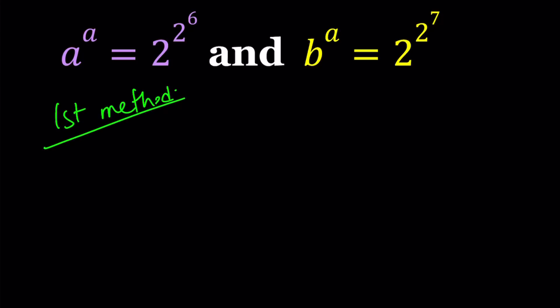First of all, I'm going to write a^a as 2^(2^6). And 2^6 is equal to 64, so I can basically write it as 2^64.